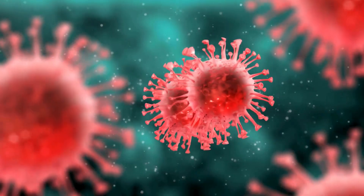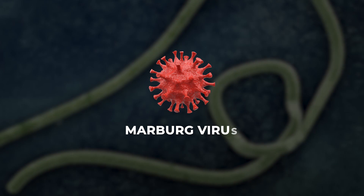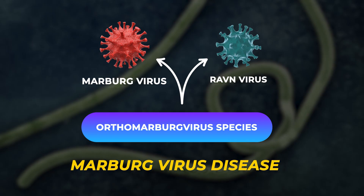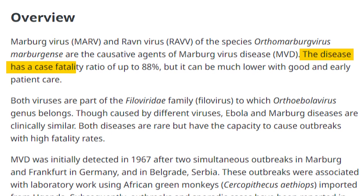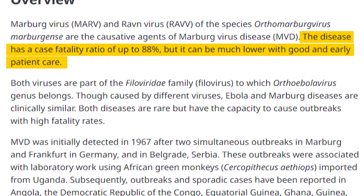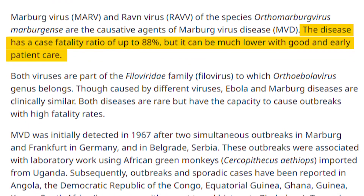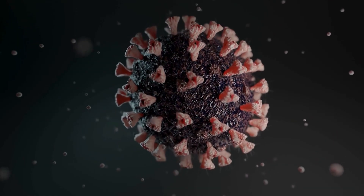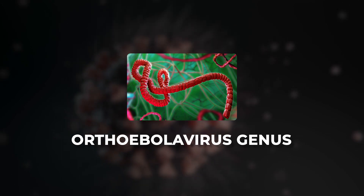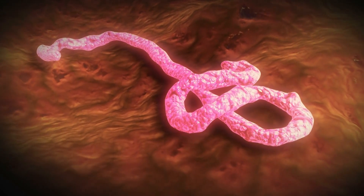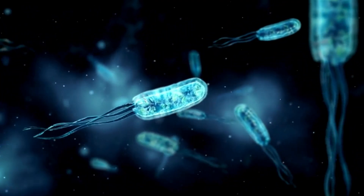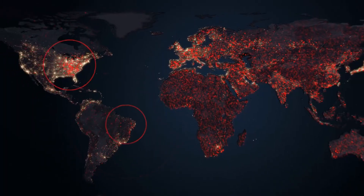What exactly is Marburg virus? Marburg virus and Ravn virus, both from the ortho-Marburg virus species, cause Marburg virus disease. The disease has a fatality rate of up to 88%, but early and proper treatment can significantly lower this rate. Both viruses belong to the Filoviridae family, which also includes the ortho-Ebola virus genus. While caused by different viruses, Ebola and Marburg diseases are clinically similar. Both are rare, but can lead to outbreaks with high fatality rates.